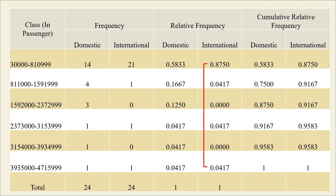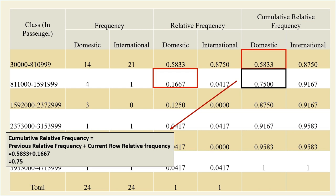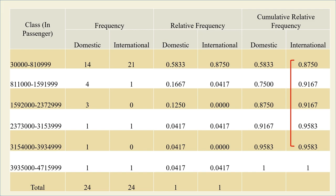At the same time, to calculate the cumulative relative frequencies, add all the previous relative frequencies to the relative frequency for the current row. Continue adding the relative frequencies in each row to get the rest of the column. The same applies to the international cumulative relative frequency.